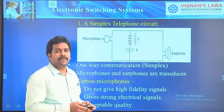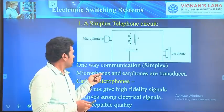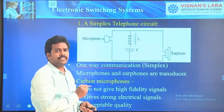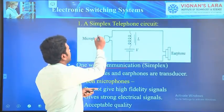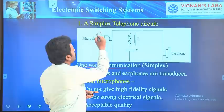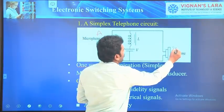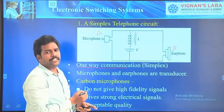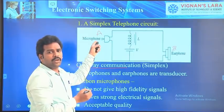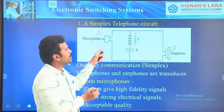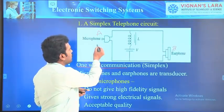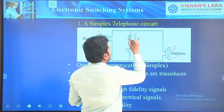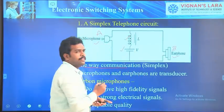What is a simple telephone circuit? It is used for one-way communication. That means when A is speaking, B has to listen; B cannot speak. That is called one-way communication. In this circuit, there are totally four components: microphone, earphone, inductor, and a battery source.